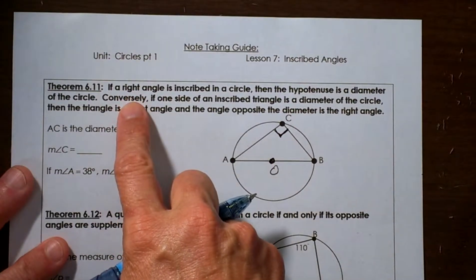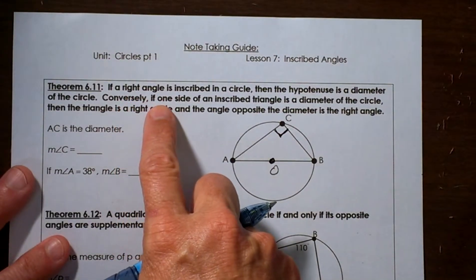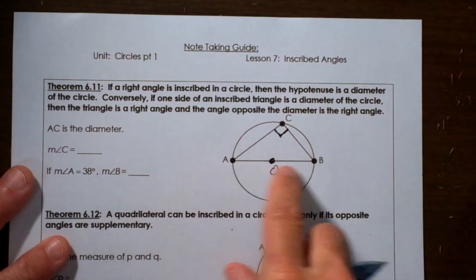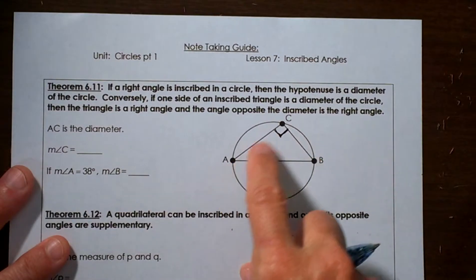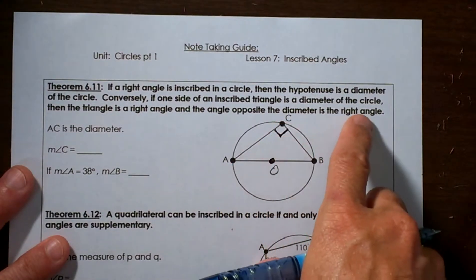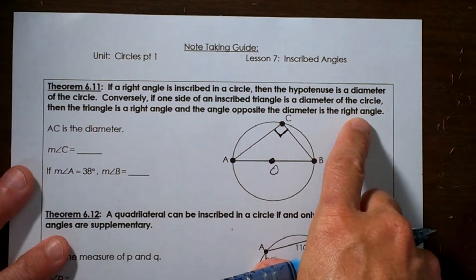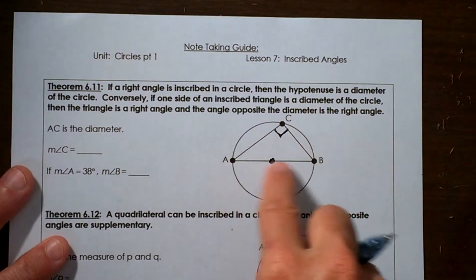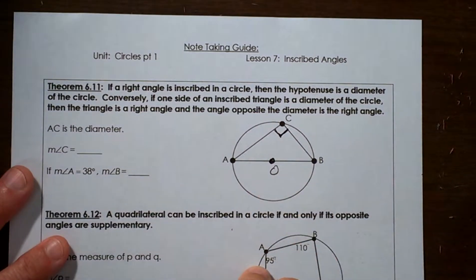Conversely, which means we're just reversing it, if one side of an inscribed triangle is a diameter, so if we know AB is a diameter, then we would know that angle C must be a right angle. So it goes both ways. If we know the angle, we can say we have a diameter. If we know we have a diameter, we know we have the right angle inscribed.